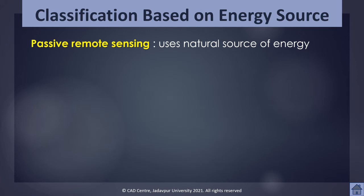Passive sensors can only be used to detect naturally occurring energy. Passive remote sensing within the optical region can only take place during the time when the sun is illuminating the earth. There is no reflected energy available from the sun at night. Energy naturally emitted within the thermal infrared portion of the electromagnetic spectrum can be detected during day or night, as long as the amount of energy is large enough to be recorded. Passive remote sensing is also possible in the microwave region, where naturally emitted microwave energy can be recorded during day or night, similar to thermal remote sensing.